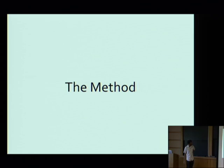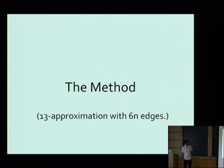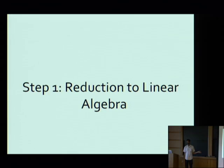I'm going to show you the proof of this theorem, which is elementary — just linear algebra — and I can fit it in this talk. For simplicity, I'll show how to find, for any graph G, a weighted sparse subgraph H with 6n edges which achieves a 13-approximation to the quadratic form. This can all be tightened to give the Ramanujan bound.